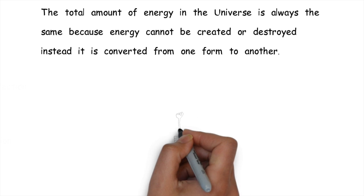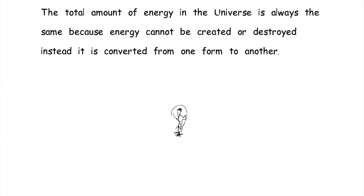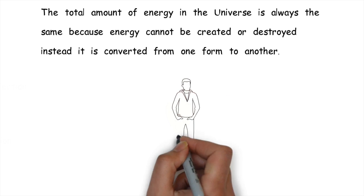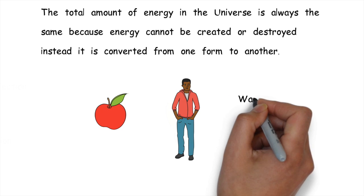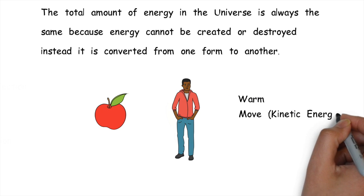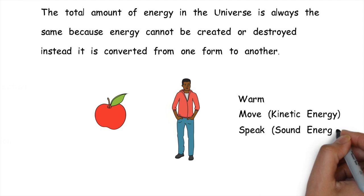A lightbulb converts electrical energy to heat and light energy. The chemical energy in the food you eat keeps your body warm, allows you to move through kinetic energy, and speak, which produces sound energy.